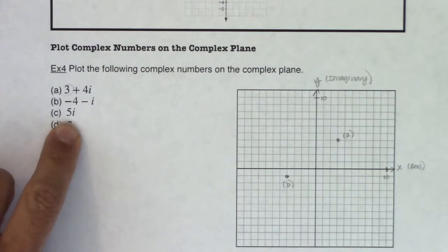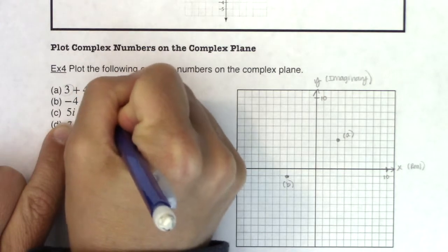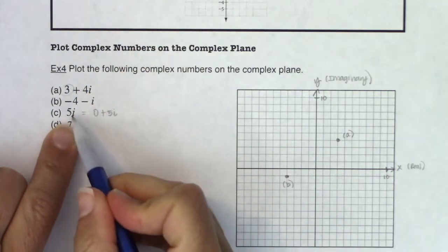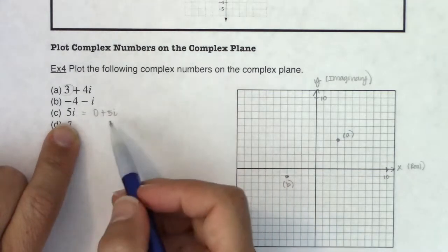Alright, if you see 5i here and you're thinking, well, where do I move? Well, you could write 5i as 0 plus 5i. Technically this is just an imaginary number, right? It doesn't have a real part to it, that's fine.